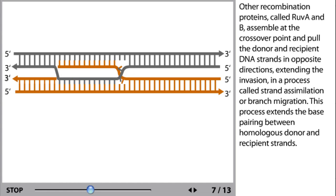Other recombination proteins called RuvA and B assemble at the crossover point and pull the donor and recipient DNA strands in opposite directions, extending the invasion in a process called strand assimilation or branch migration. This process extends the base pairing between homologous donor and recipient strands.